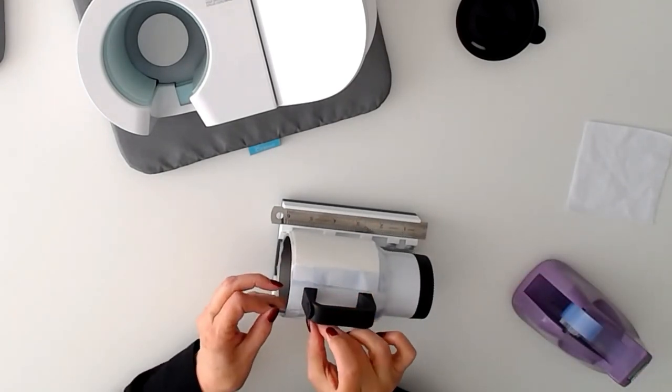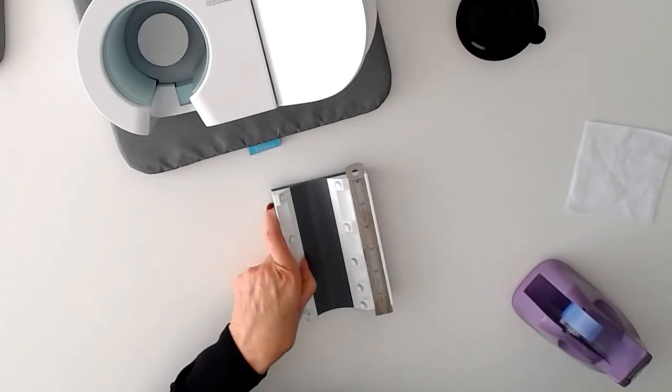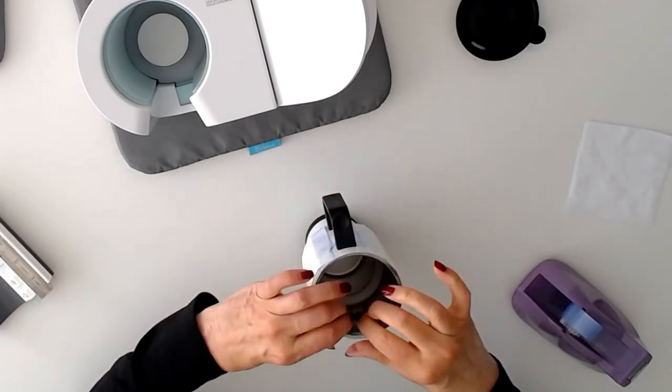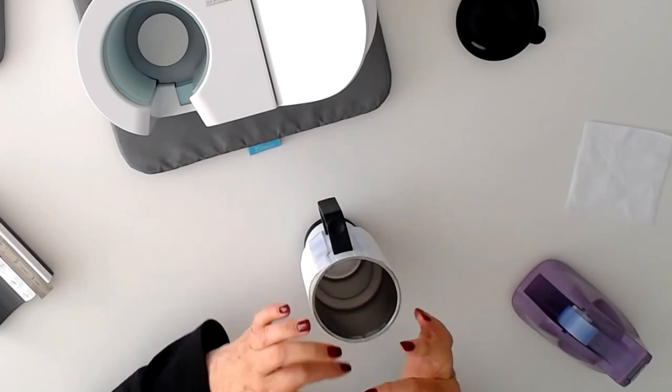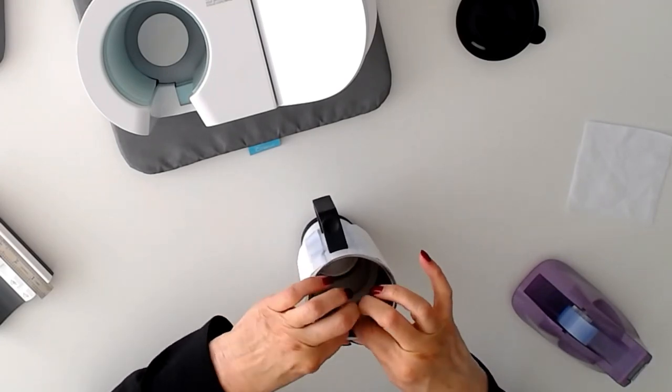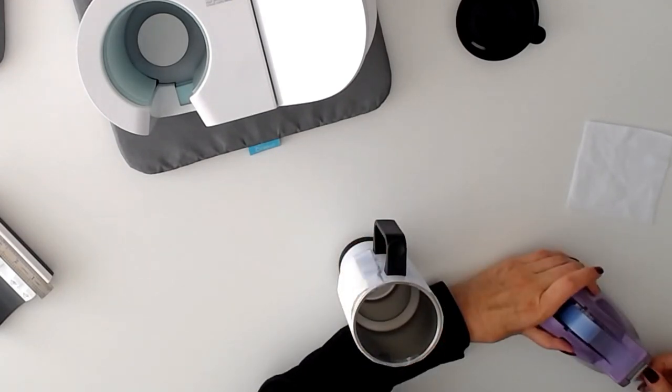You want to make sure the butcher paper doesn't move while it's in the press. Isn't this cradle amazing? I love it. So we'll add a piece of tape to the butcher paper there to keep it in place. And again on the bottom.